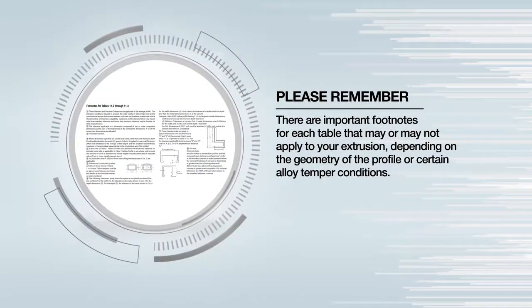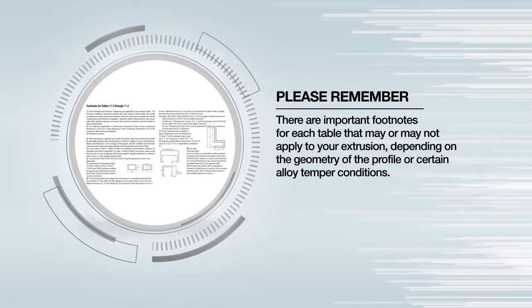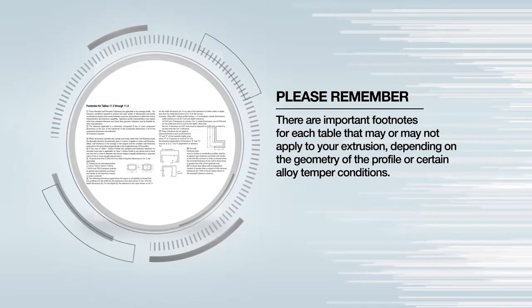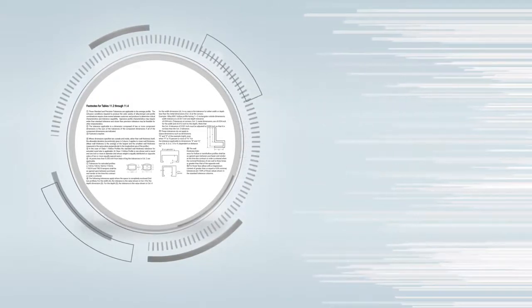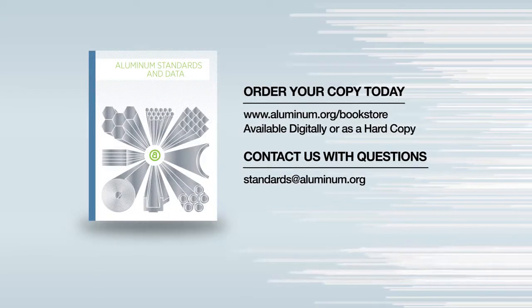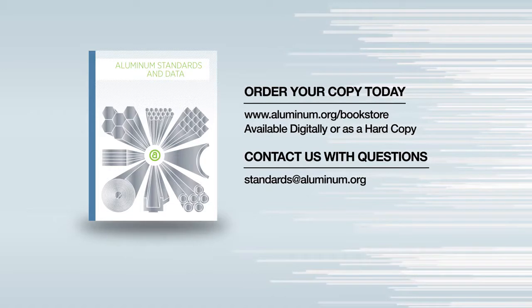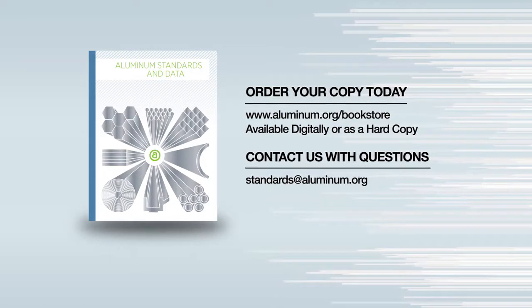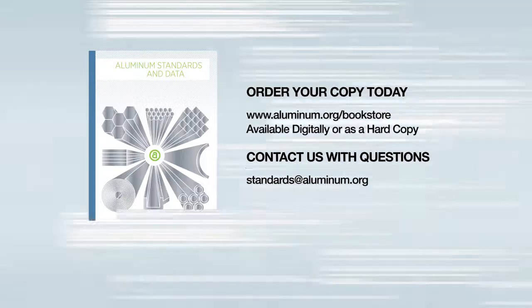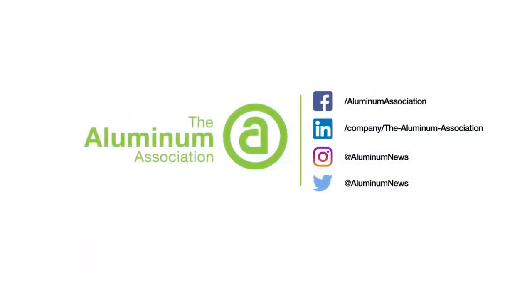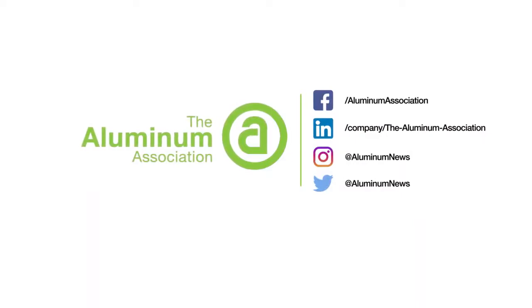There are important footnotes for each table that may or may not apply to your extrusion, depending on the geometry of the profile or certain alloy temper conditions. Get your copy of Aluminum Standards and Data, which contains the tables covered in this video, from the Aluminum Association's Bookstore. It is available in U.S. or metric units. Don't forget to subscribe to our YouTube channel and engage us on social media. Thanks for watching.